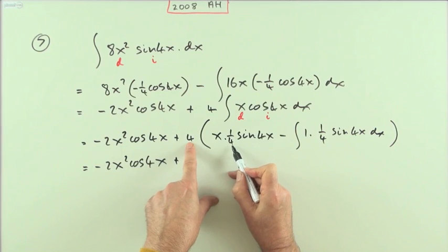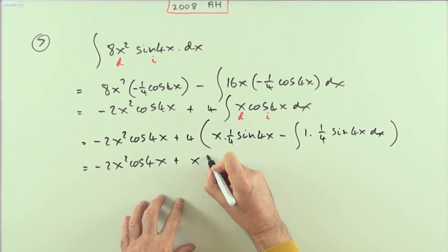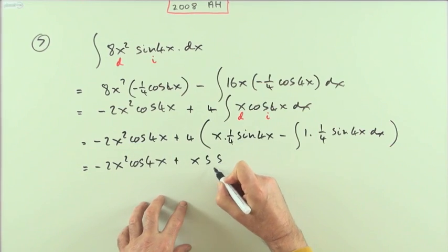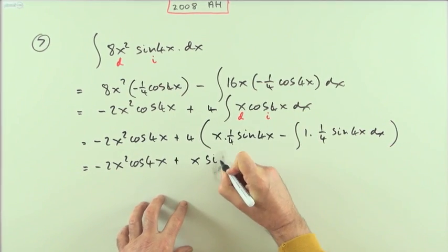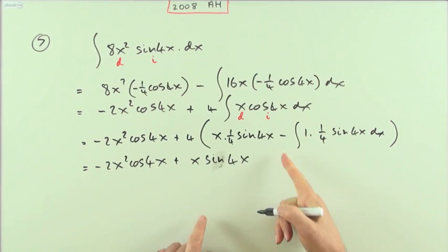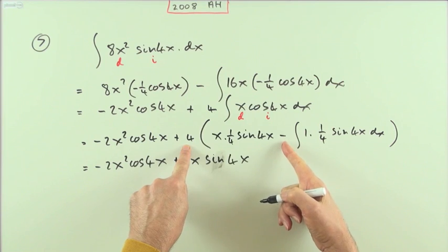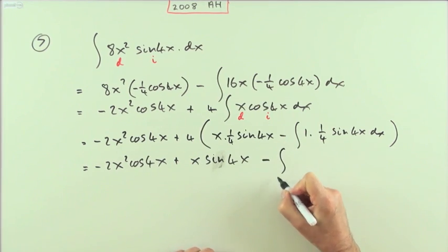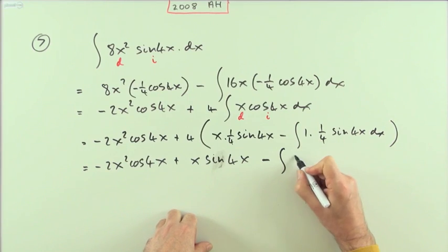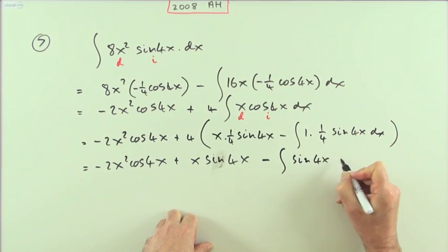Then for this part I've got 4 will disappear, but I've got negative, so it's minus the integral of—and it'll just be sine 4x dx. Almost there.